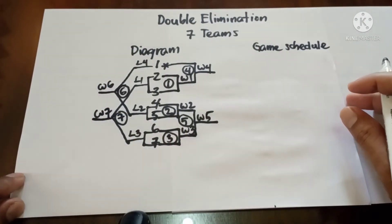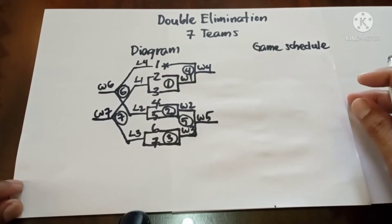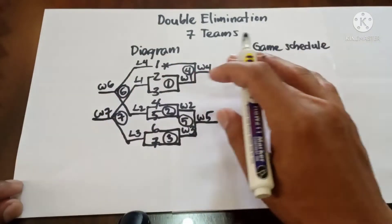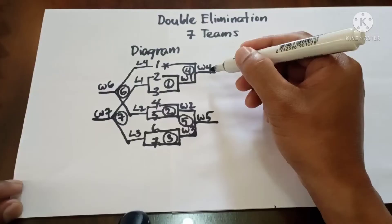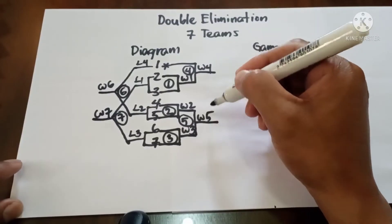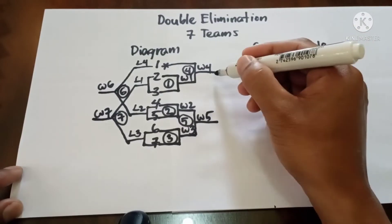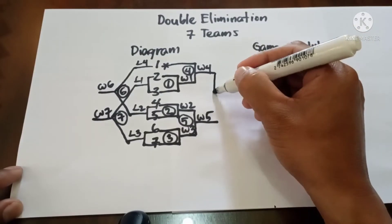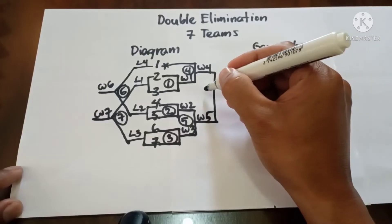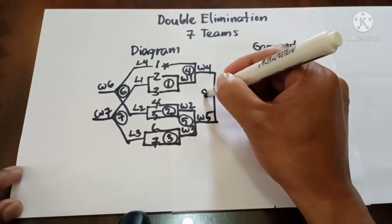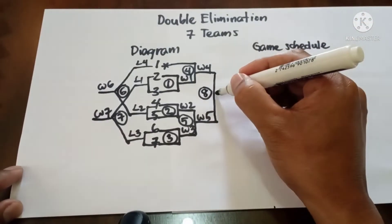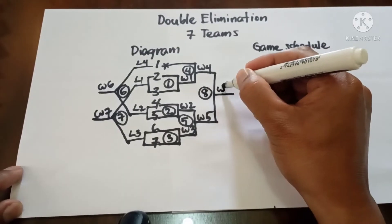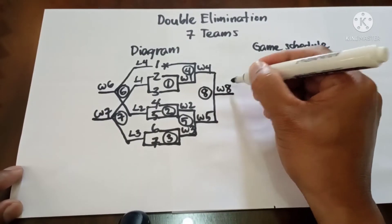Going back to the winner's bracket, Winner 4 plays against Winner 5 in Game 8. The result is Winner 8.